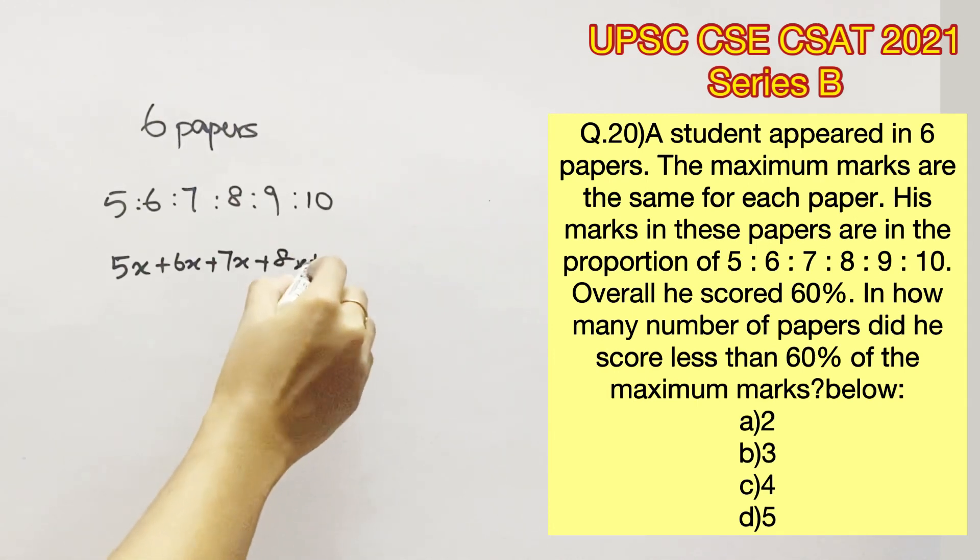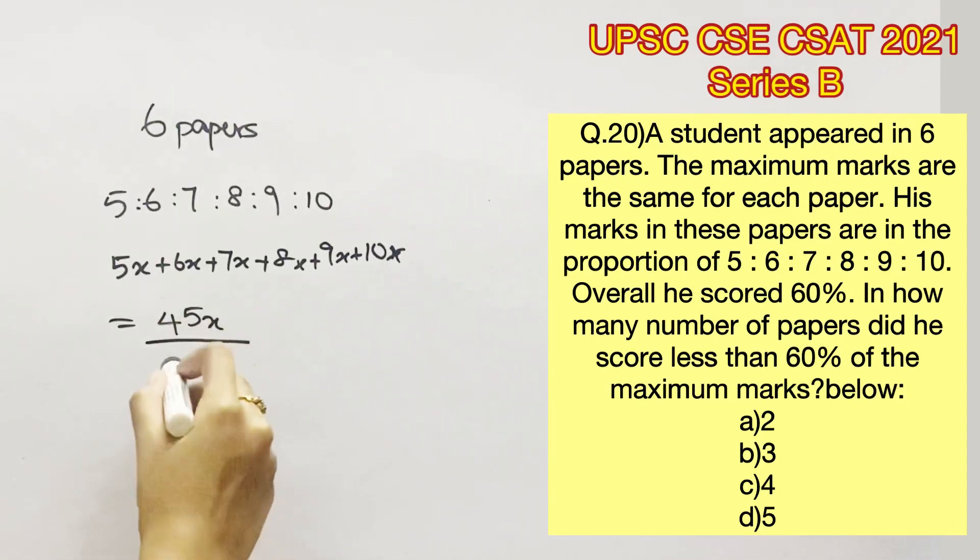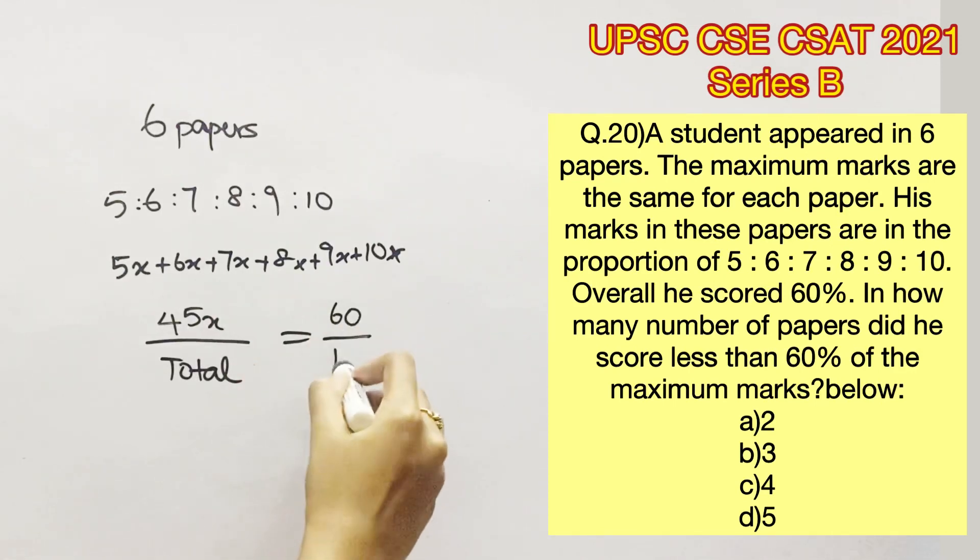Adding all these up gives us the total marks that he has obtained which is 45x. They have given that overall he has scored 60%, which means this 45x upon the total marks will give us 60%.